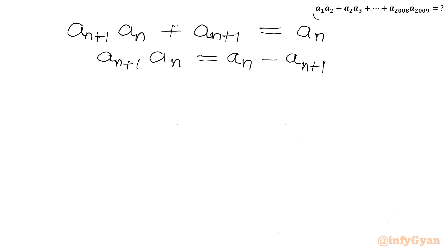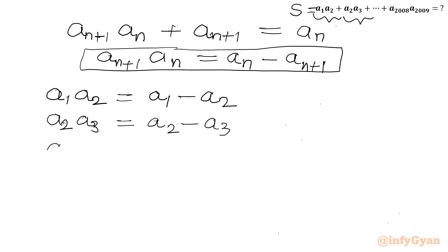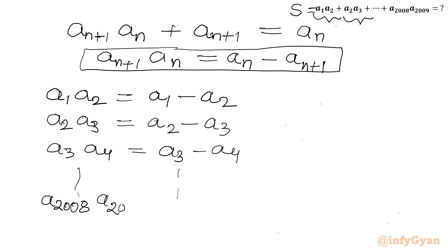Now let's calculate a_1*a_2, a_2*a_3, and so on from the sum expression. Using this formula, a_1*a_2 = a_1 - a_2. Then a_2*a_3 = a_2 - a_3, and a_3*a_4 = a_3 - a_4. Continuing in the same way, a_{2008}*a_{2009} = a_{2008} - a_{2009}.